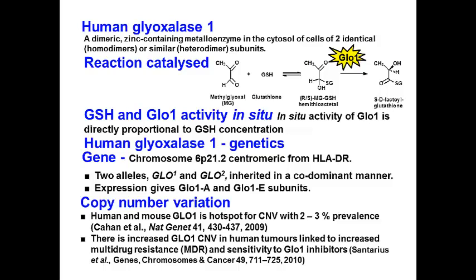The gene for human glyoxalase 1 is on chromosome 6P21.2. There are two alleles inherited in a simple codominant manner, expressing two gene products with alanine or glutamic acid at residue 111.